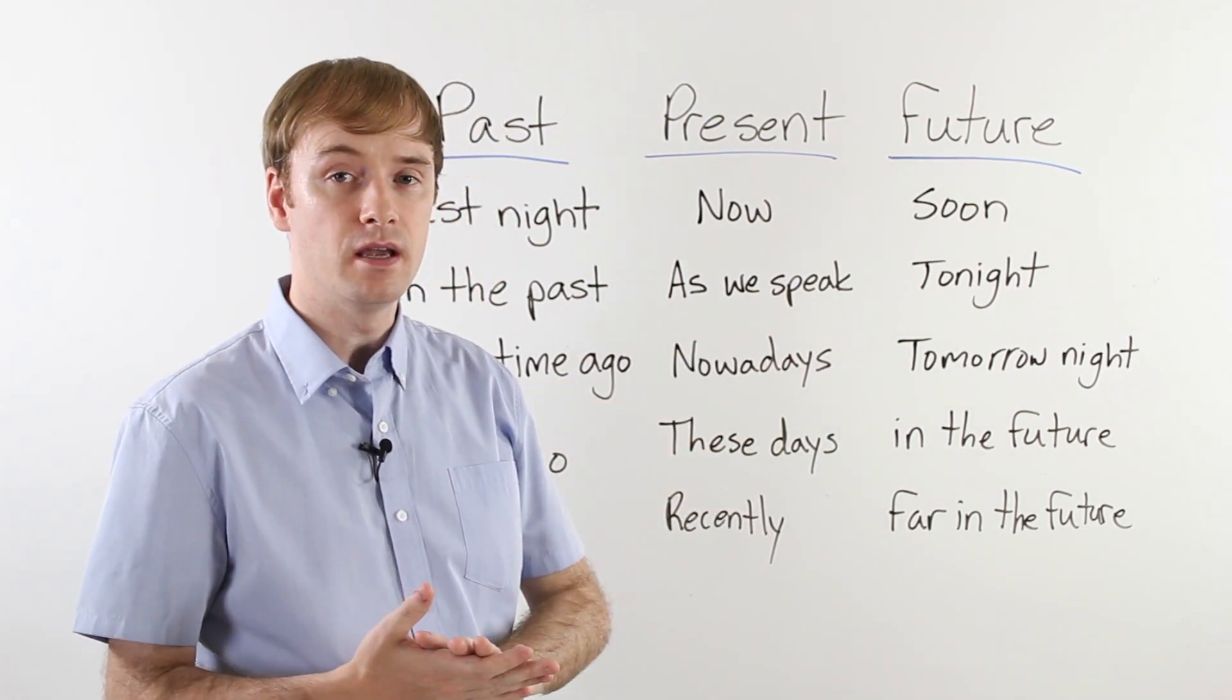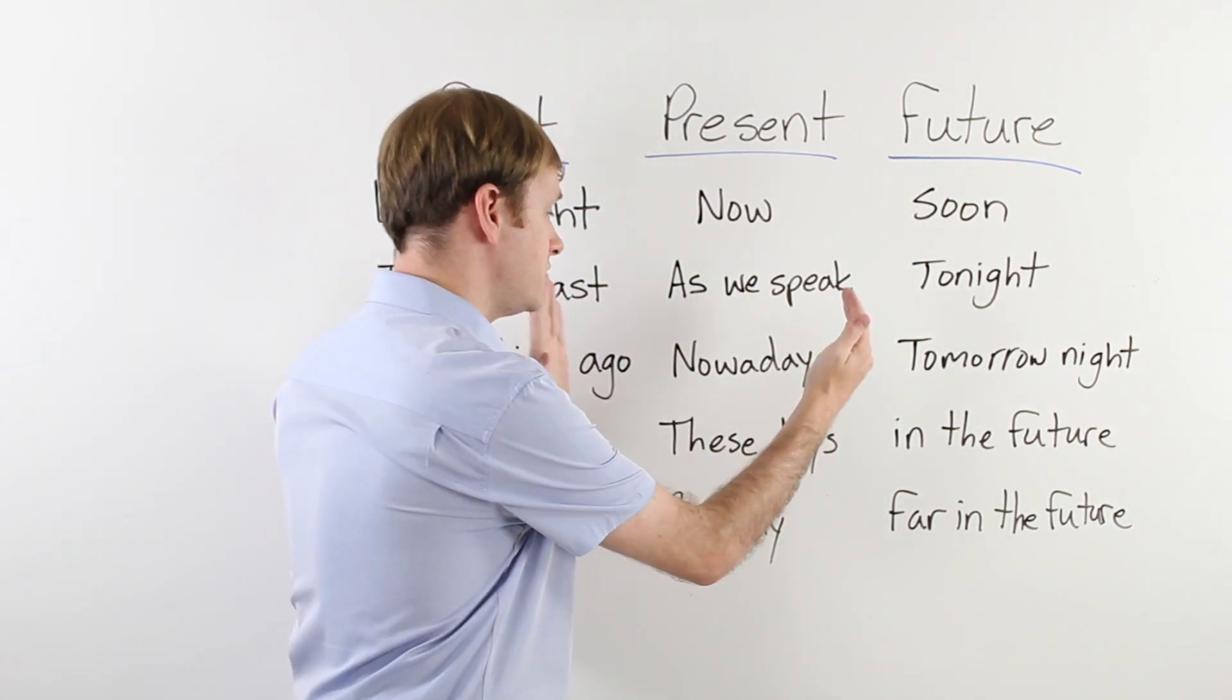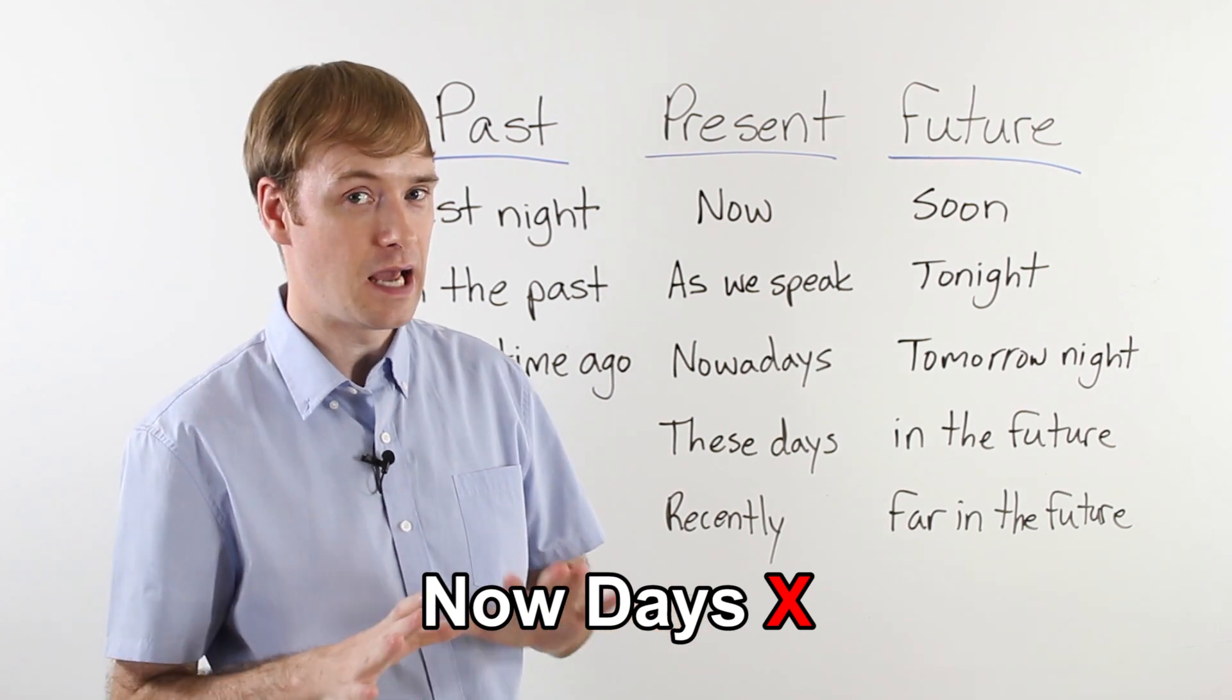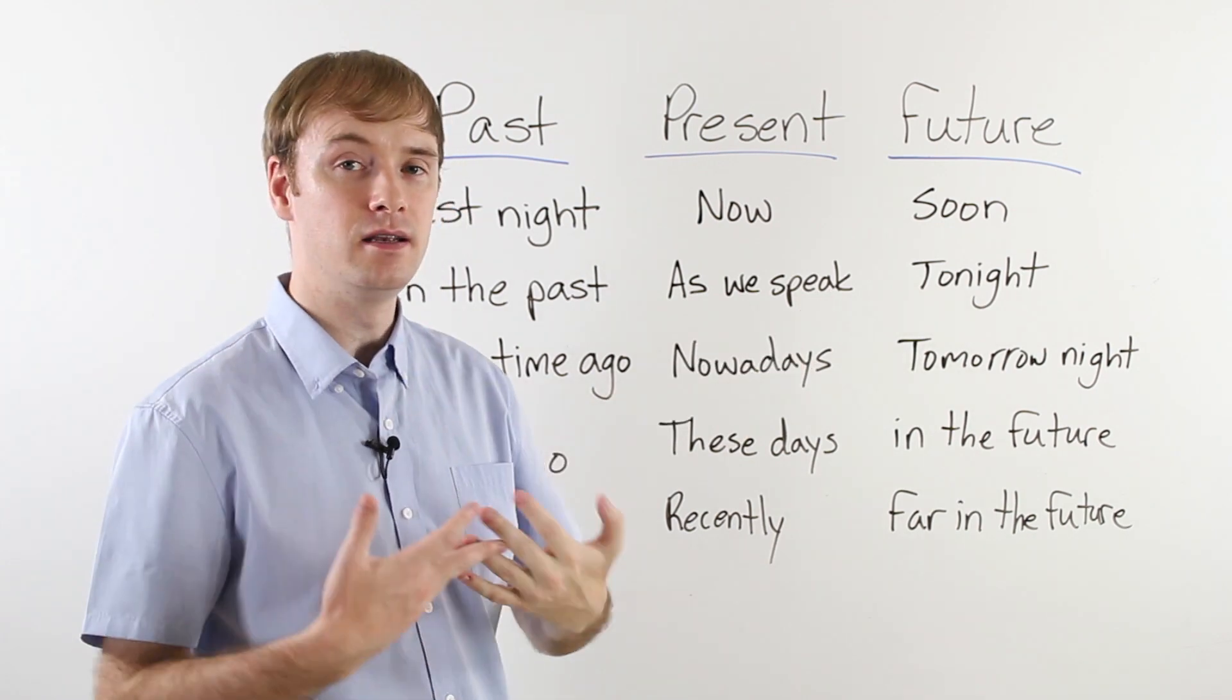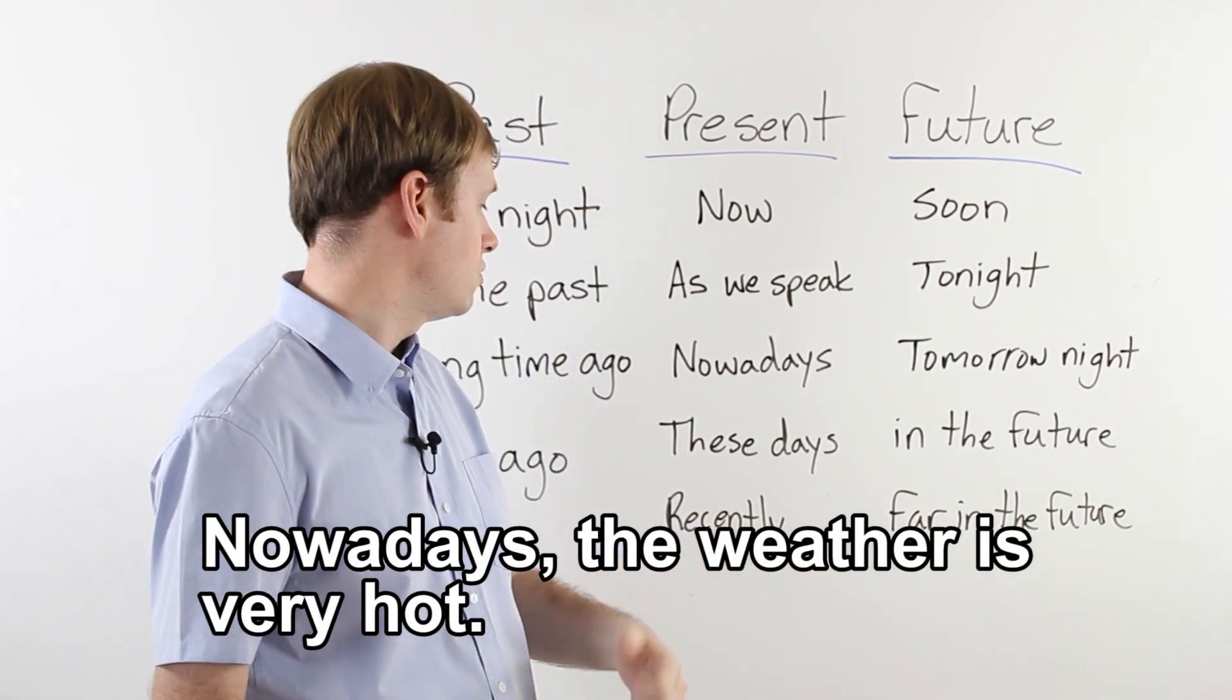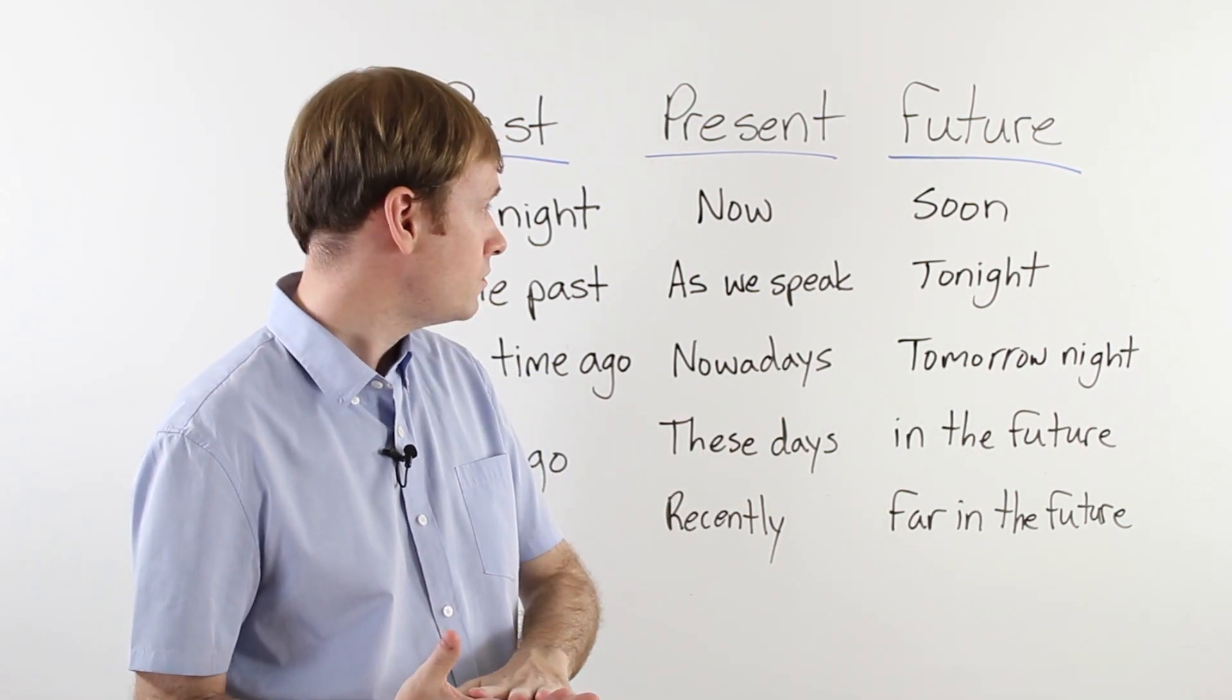So something has happened around this time. Now, be careful with nowadays. Nowadays is one word. A lot of my students say nowadays. Nowadays is wrong. Don't say nowadays. You have to say nowa. There's an 'a' there. Nowadays. These days. Recently. So nowadays, the weather is very hot. Or these days, the economy is bad. So all of them, very similar.